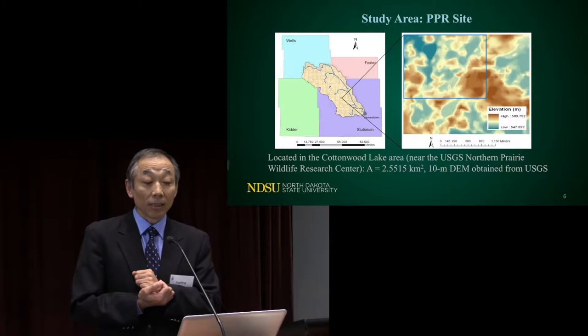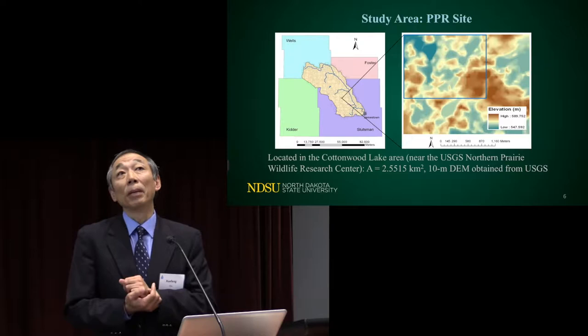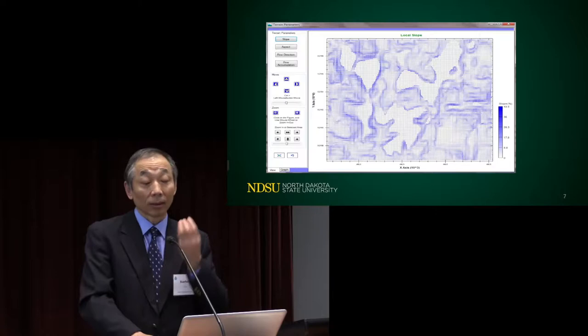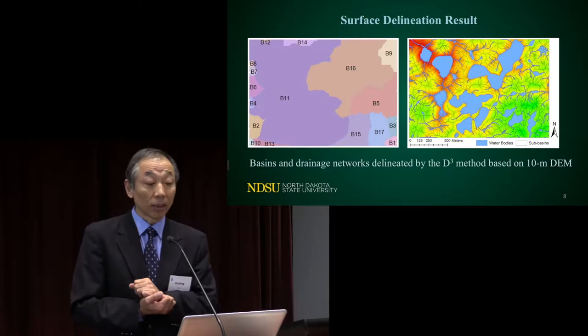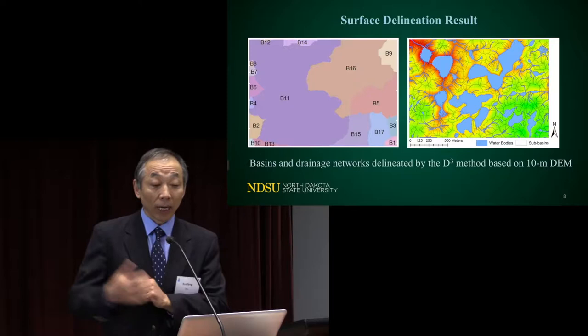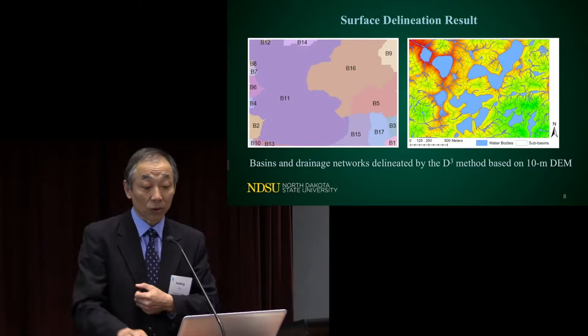We then tested this program by selecting many sites in North Dakota. One of them is located in the Cotland Lake area, within the PPR. For delineation, the major DEM we used was a 10-meter DEM. The program performs delineation and determines all topographic parameters such as slope, flow directions, and accumulations. In the end, we divide the area into many small basins — the largest ones are basins B11 and B16. On the right-hand side you can see the delineation results, with many potholes identified along with their connections at many different levels.